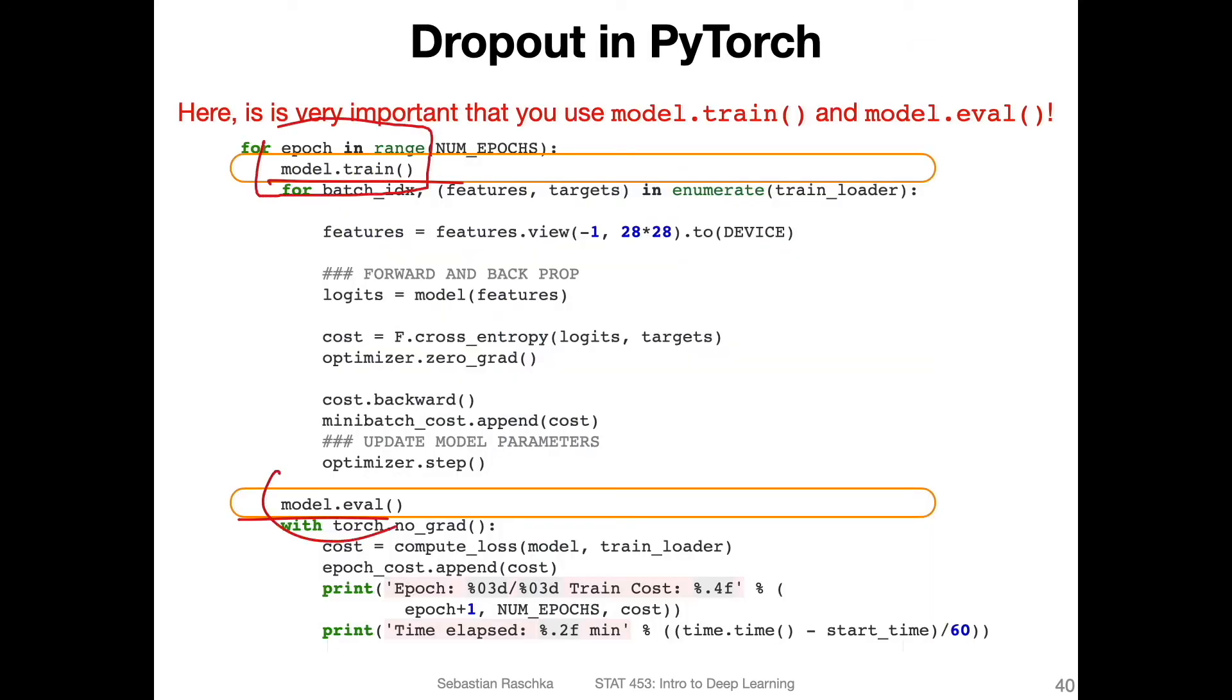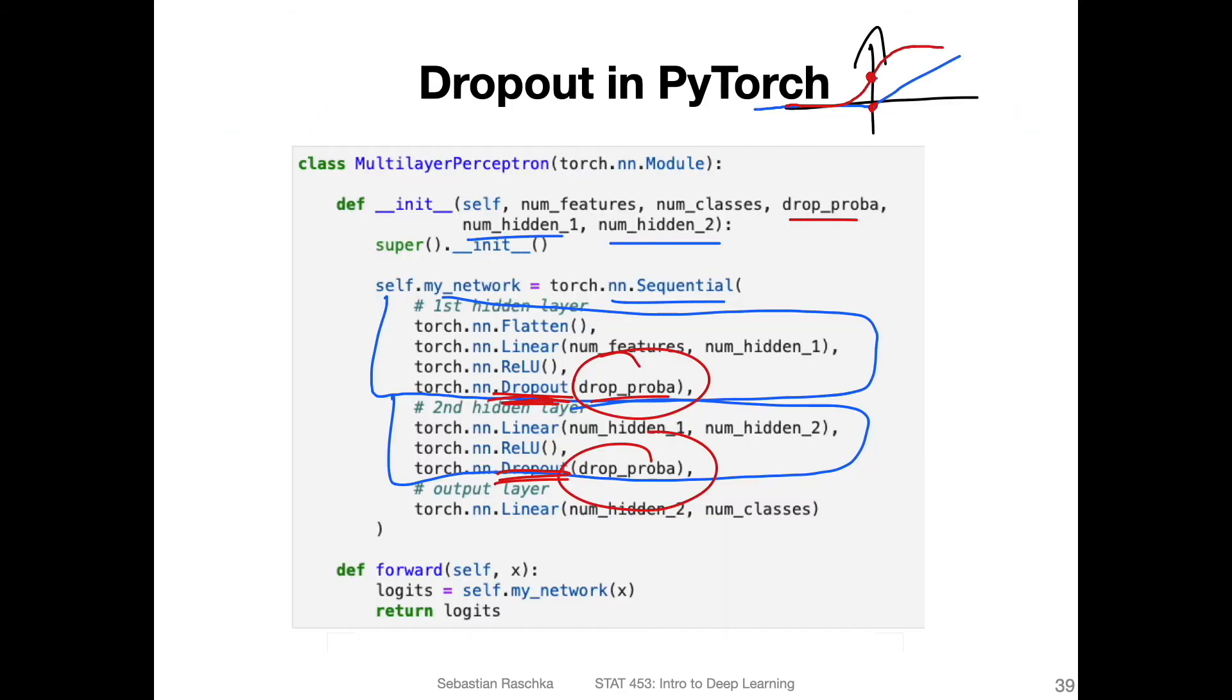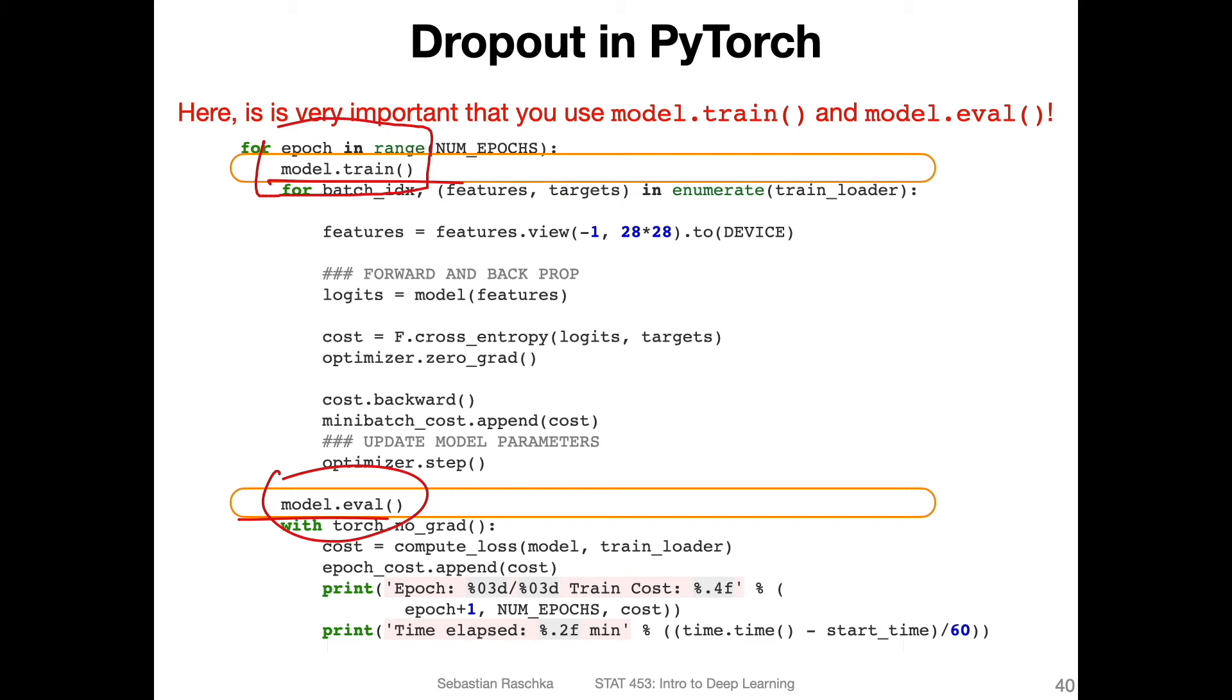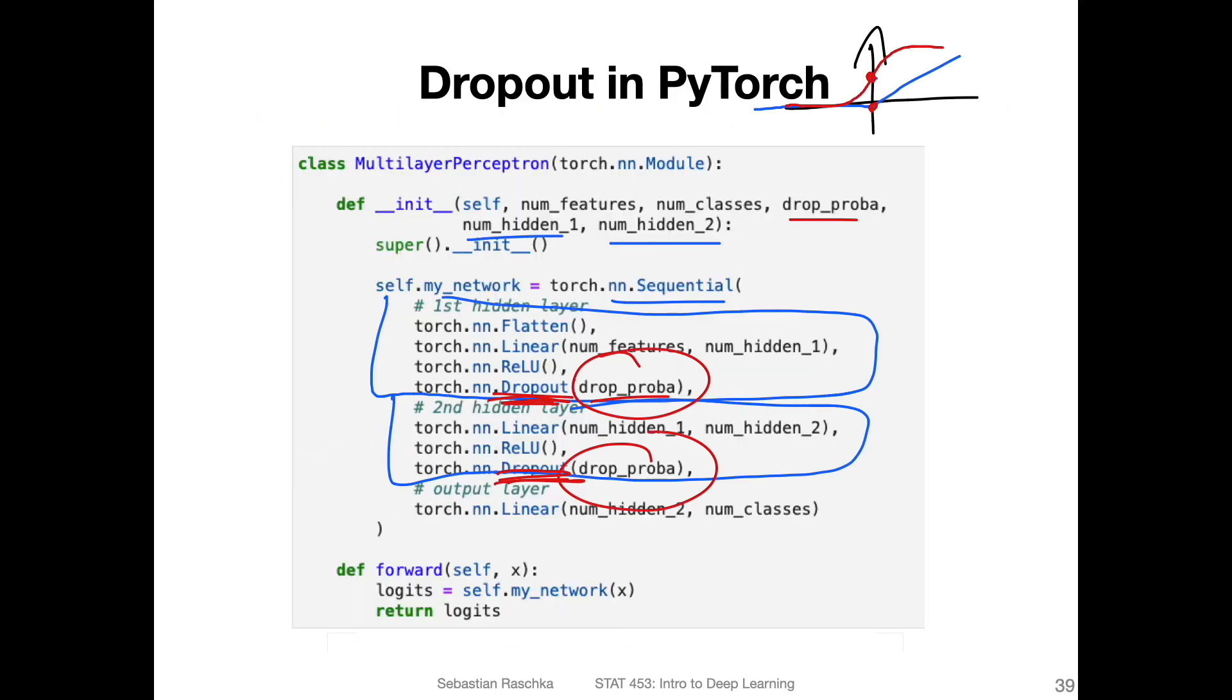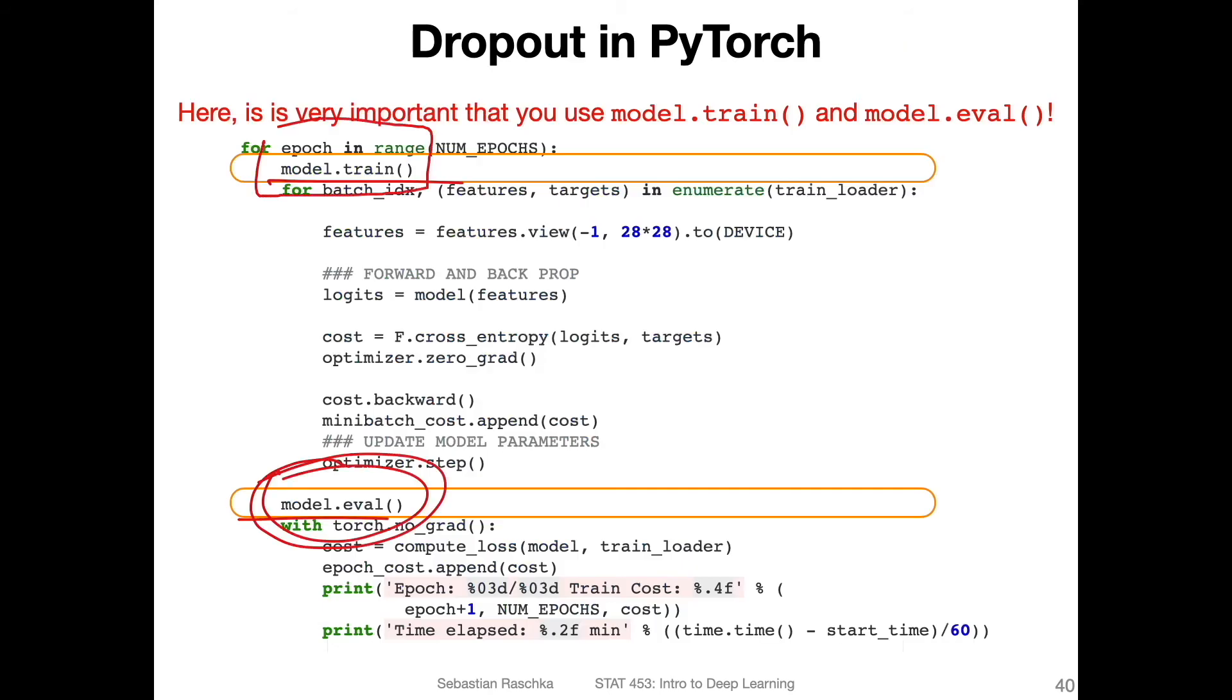So why is that required? This will essentially set the model or tell the model that it's currently in training mode, so it will automatically use dropout. So during training mode, it will actually use these dropout things. However, during model evaluation, during testing here, it will essentially skip dropout, because we don't want to use dropout during testing or prediction. So when we set our model to eval mode, then it will not use dropout. So it can essentially just skip dropout or you can also think of just setting the drop probability to 0.0. So it won't drop anything.